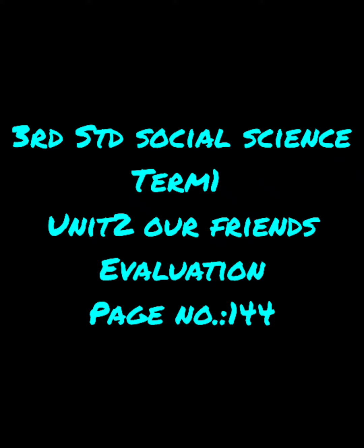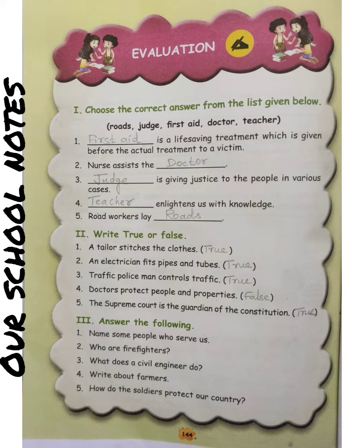Third Standard Social Science, Unit 2: Our Friends, Page 144. Evaluation, Terminator 1. Choose the correct answer from the list given below. First question.